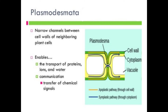Plasmodesmata are narrow channels between cell walls of neighboring plant cells. They enable the transport of proteins, ions and water and communication with transfer of chemical signals. Thank you for listening and watching.